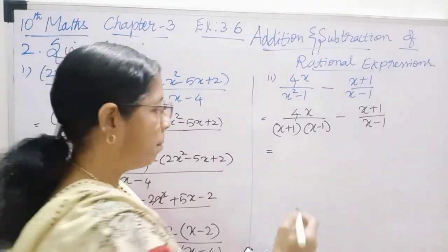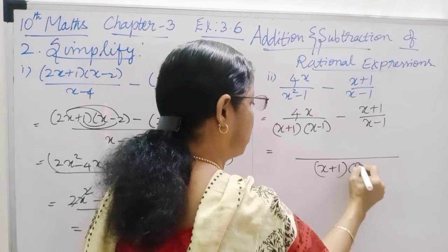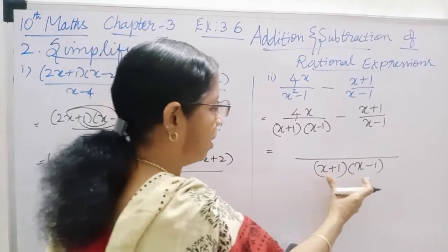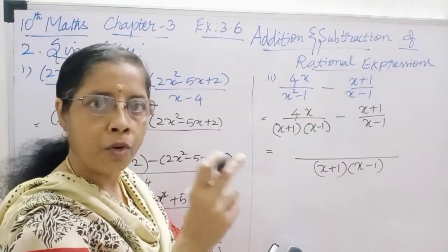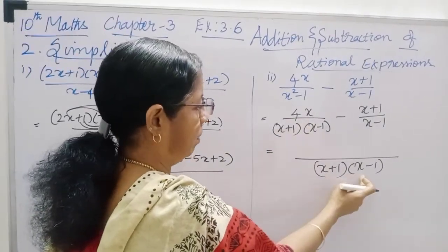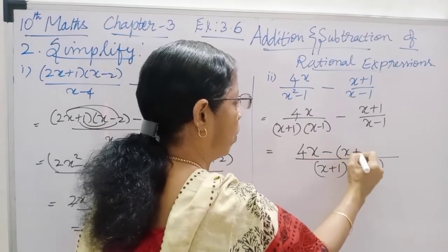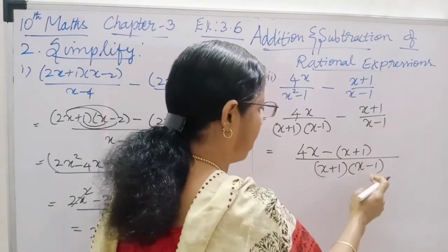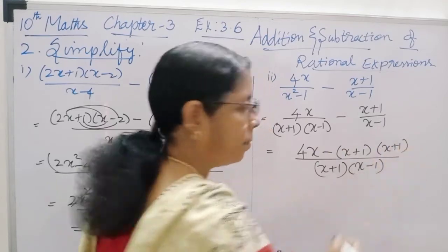We know how to find the LCM. So, the LCM is x plus 1 into x minus 1. Since the denominators are different, we rewrite with the common denominator. The two factors are then considered — you will have 4x minus the second fraction's numerator, with x plus 1 in the denominator, multiplied by x minus 1. Just you will have x plus 1 along with x plus 1.